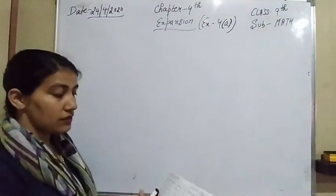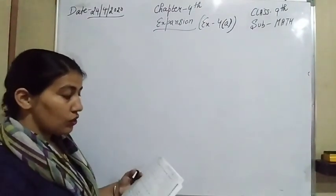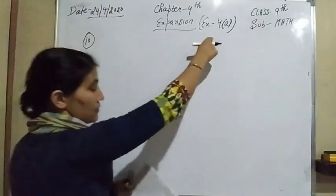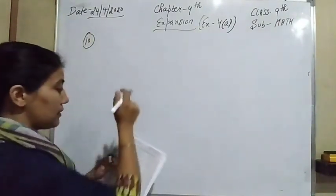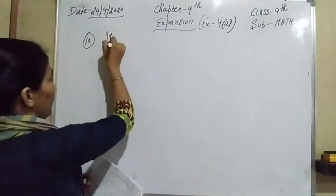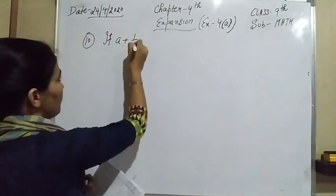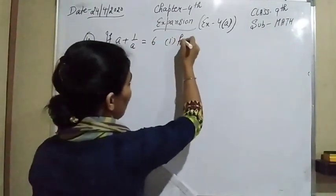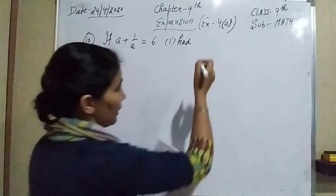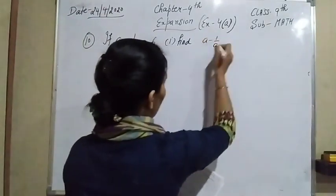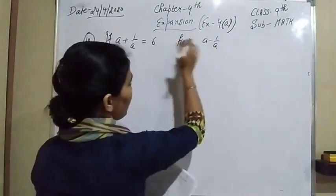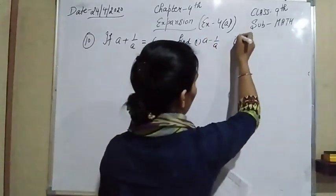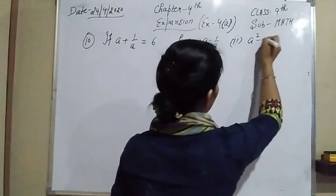Now come to the next question of this worksheet. The 10th question of exercise 4th A: the statement is, if A plus 1 over A is equal to 6, firstly we have to find A minus 1 over A, and secondly we have to find A square minus 1 over A square.